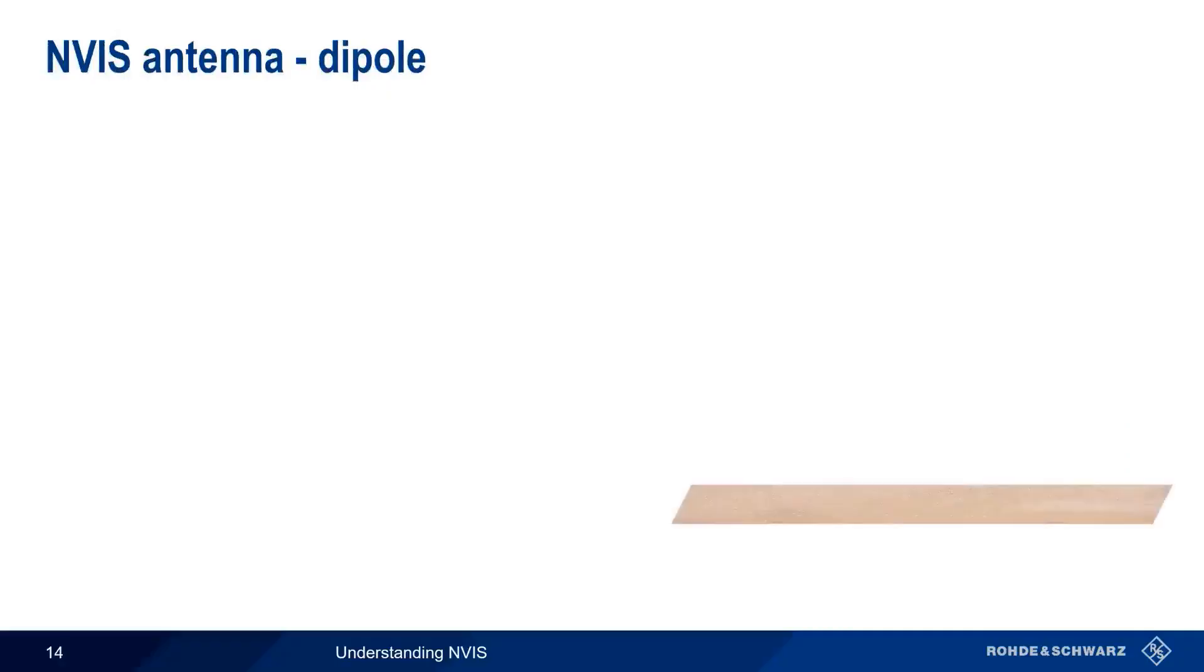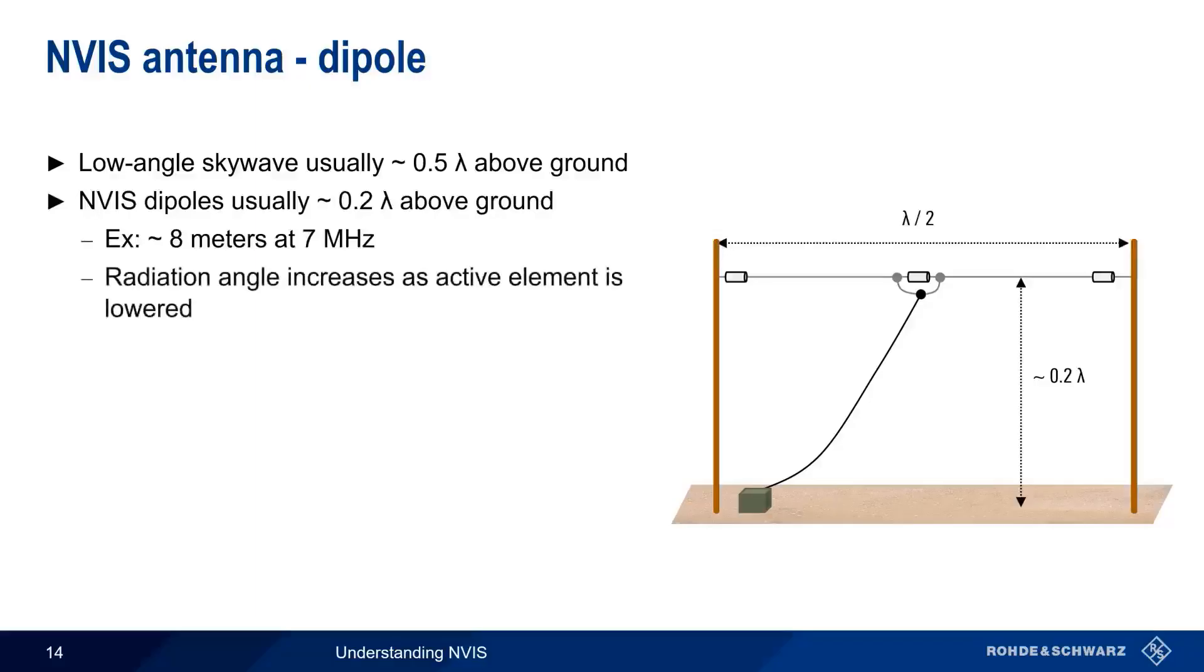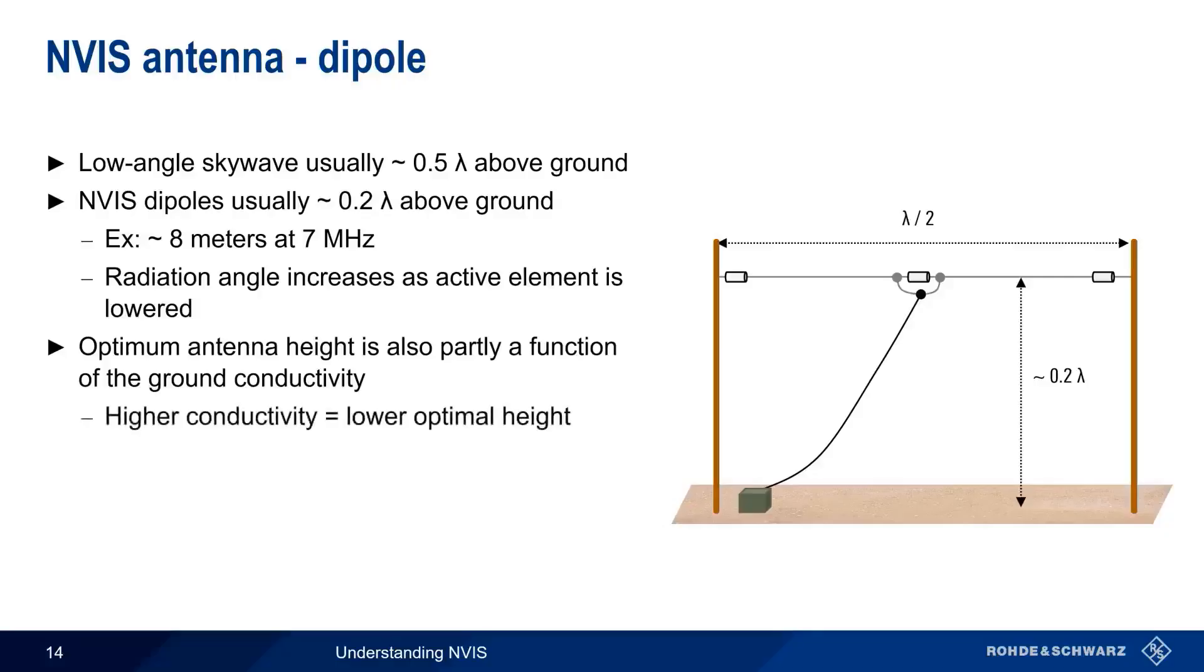The standard half-wavelength dipole used widely for low-angle HF skywave propagation can also be adapted for use in NVIS applications. A traditional skywave dipole is usually positioned roughly half a wavelength above ground. In order to create a high radiation angle, a NVIS dipole needs to be much lower, usually around 0.2 wavelengths above the ground. For example, if the operating frequency were 7 MHz, a NVIS dipole should be erected approximately 8 meters above the ground. Generally speaking, the lower the active element, the higher the radiation angle. To some extent, the optimum antenna height is also a function of ground conductivity. The higher the conductivity, the lower the optimal height.